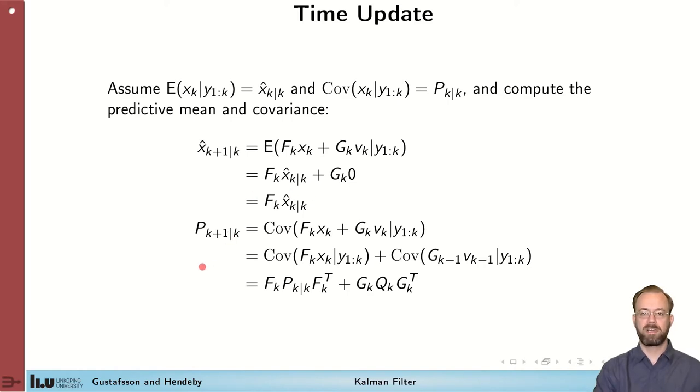We derive the covariance in a similar fashion. So we plug in the motion model into the covariance expression. We notice that we can push in the covariance. We get four terms of which two are immediately removed. Those that relate to cross correlations between x and v, because we said that those should be independent. So we have this term here that is covariance of F times x, which turns out to be F P F transpose, and then we have a similar term relating to the covariance of the process noise. And this is the updated process noise.